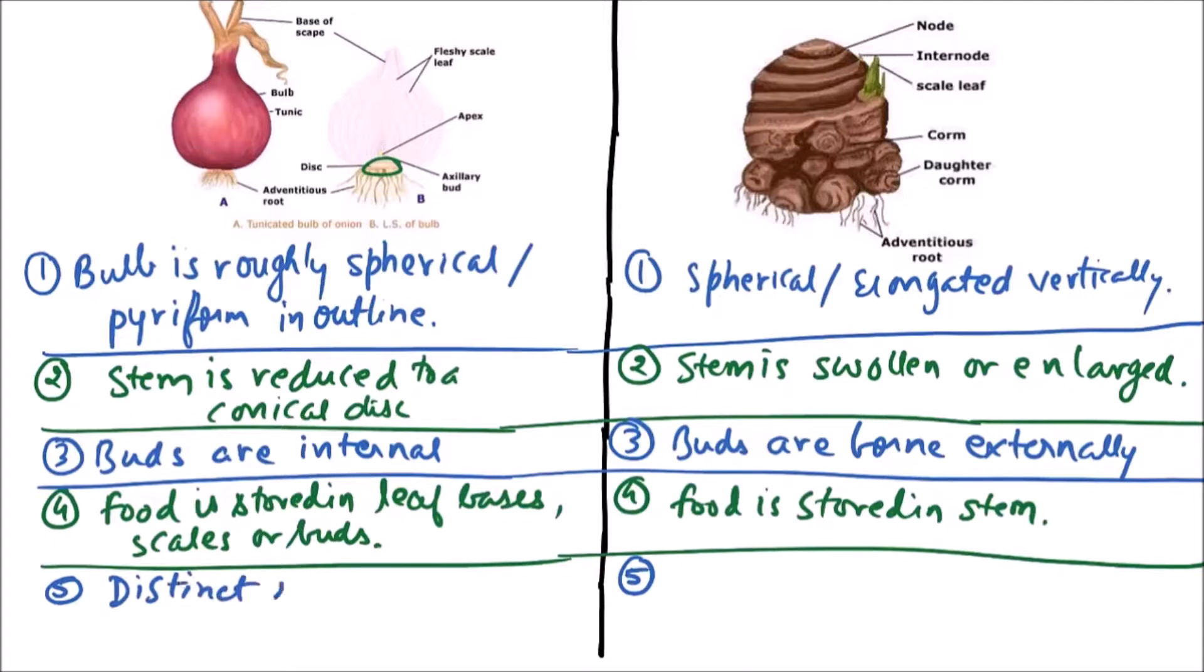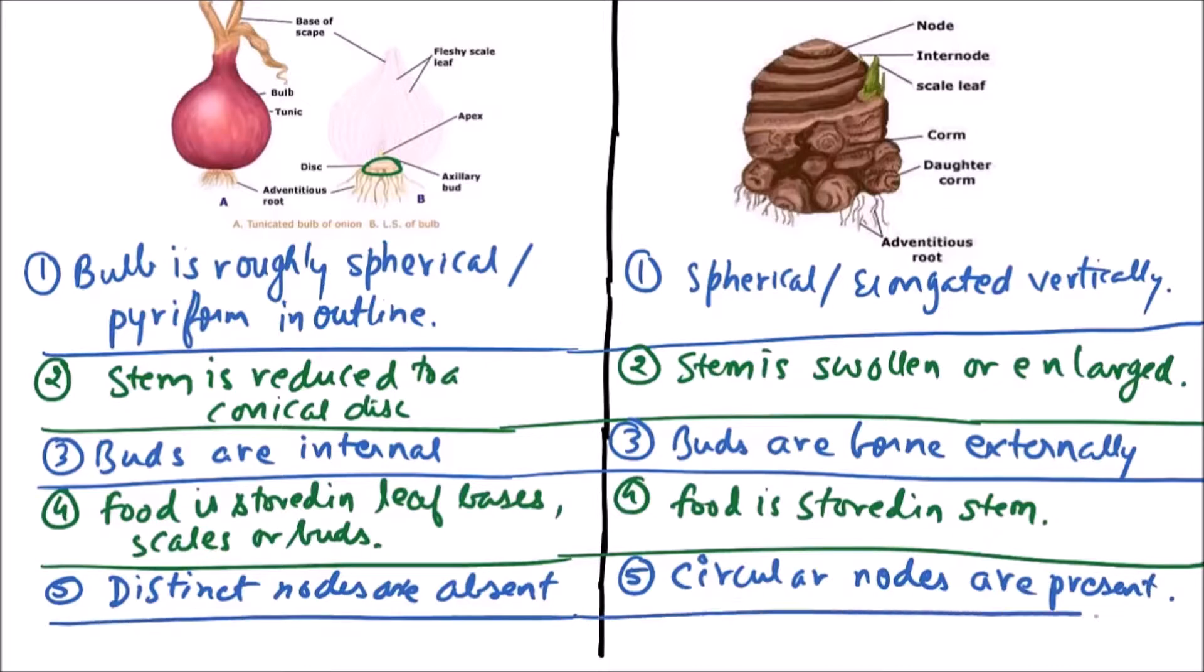Distinct nodes are absent in bulb. While here, circular nodes are present which are distinct. We can observe that these are the circular nodes.